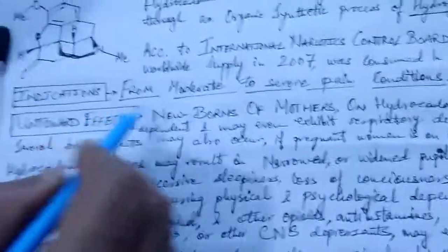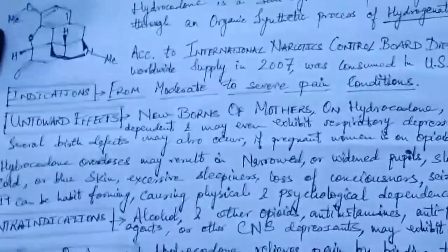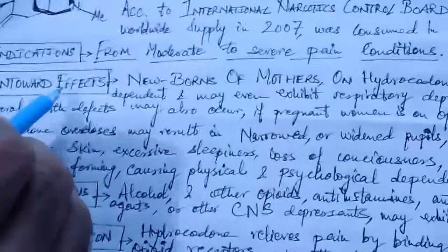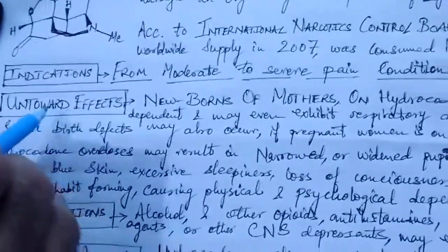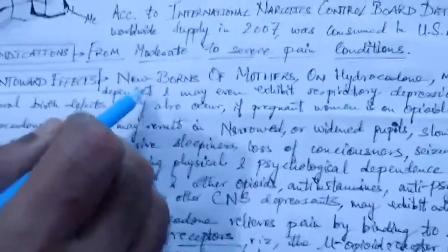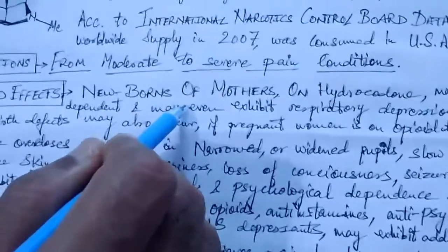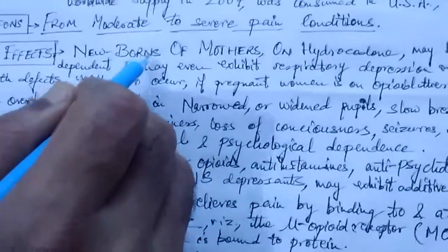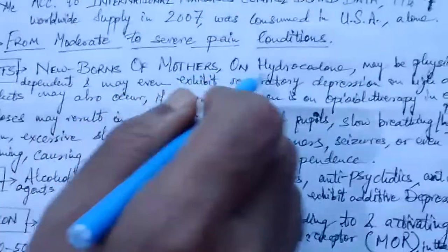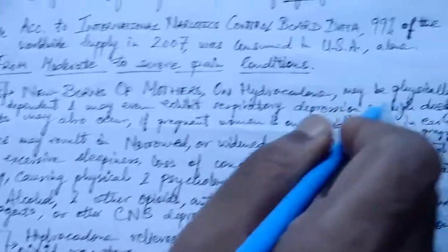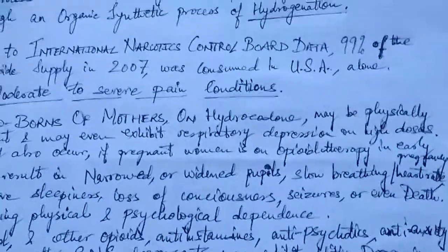Indications for this drug include moderate to severe pain conditions. It is generally prescribed for moderate to severe pain. The undesired or adverse effects of hydrocodone include serious risks, particularly to newborns.